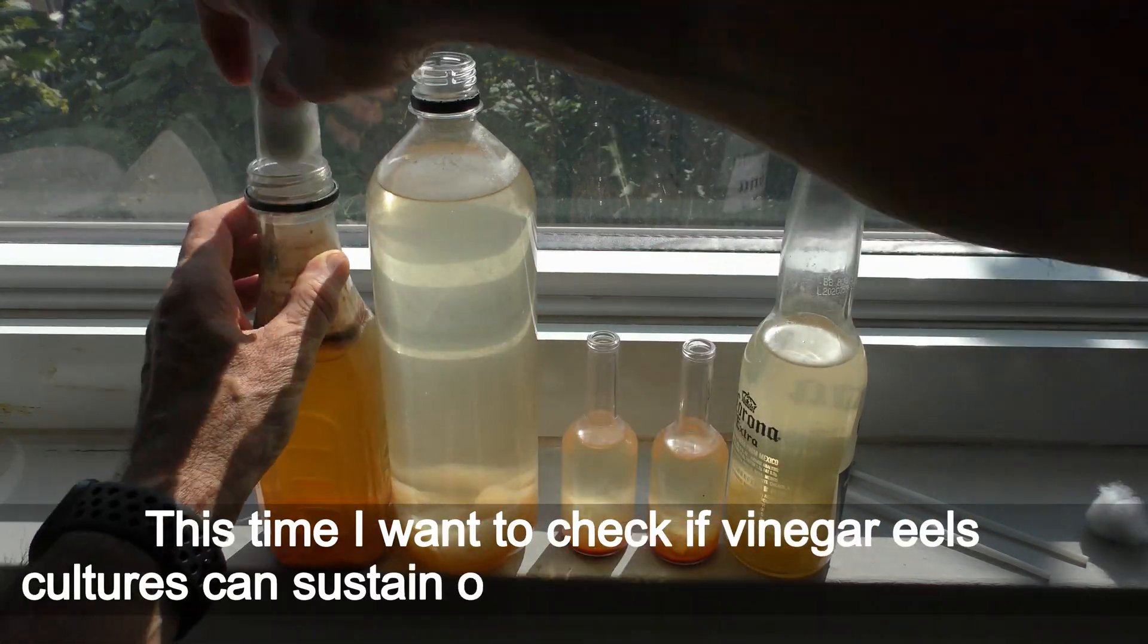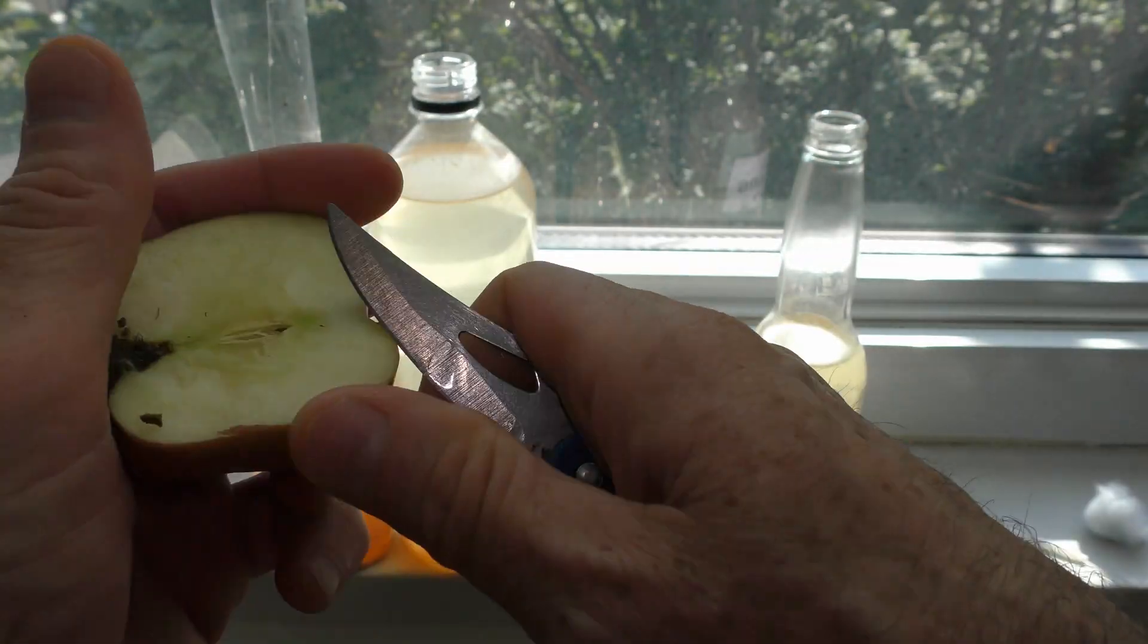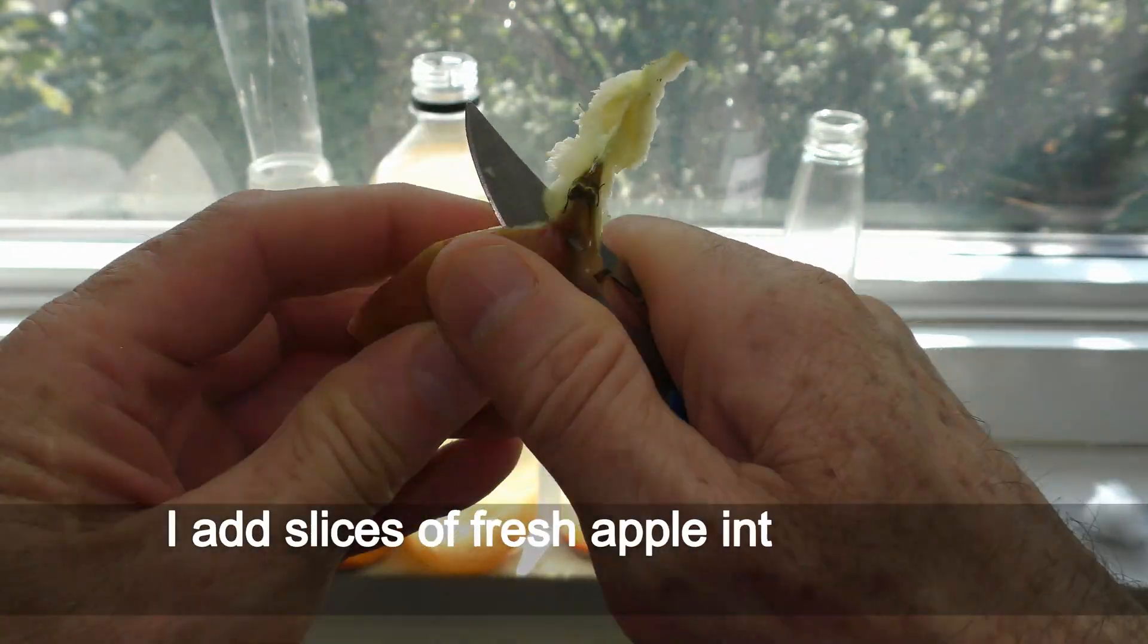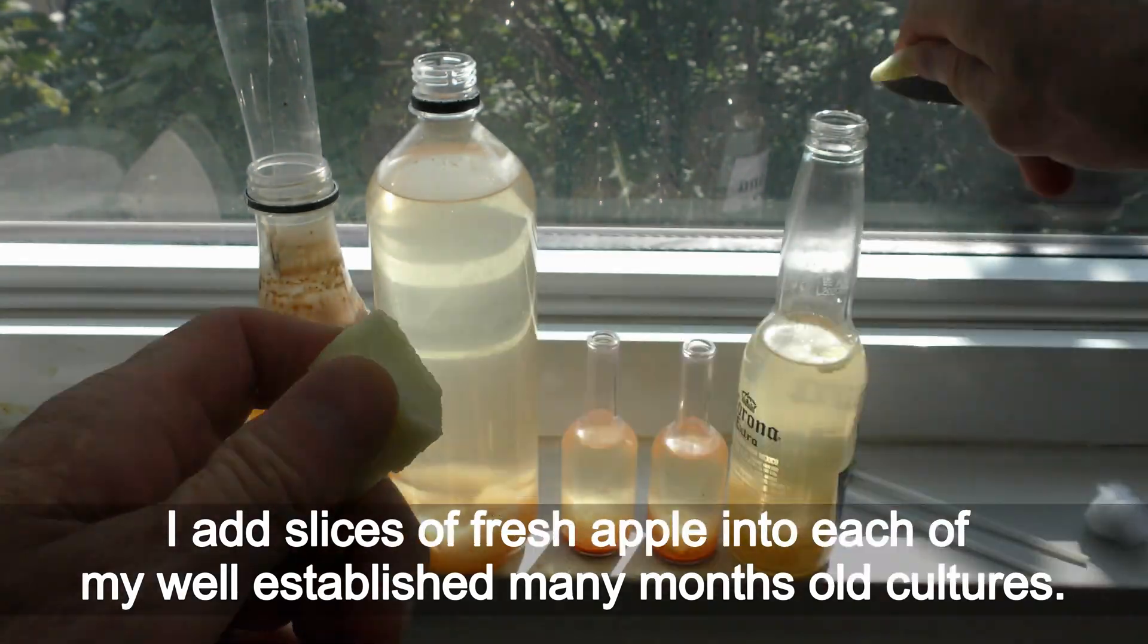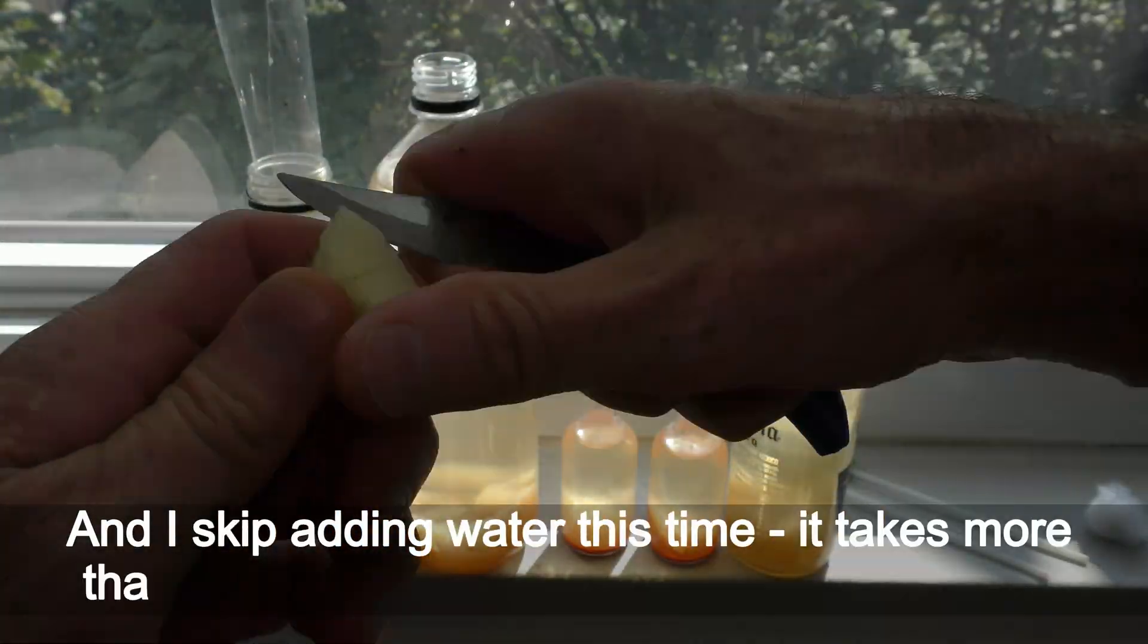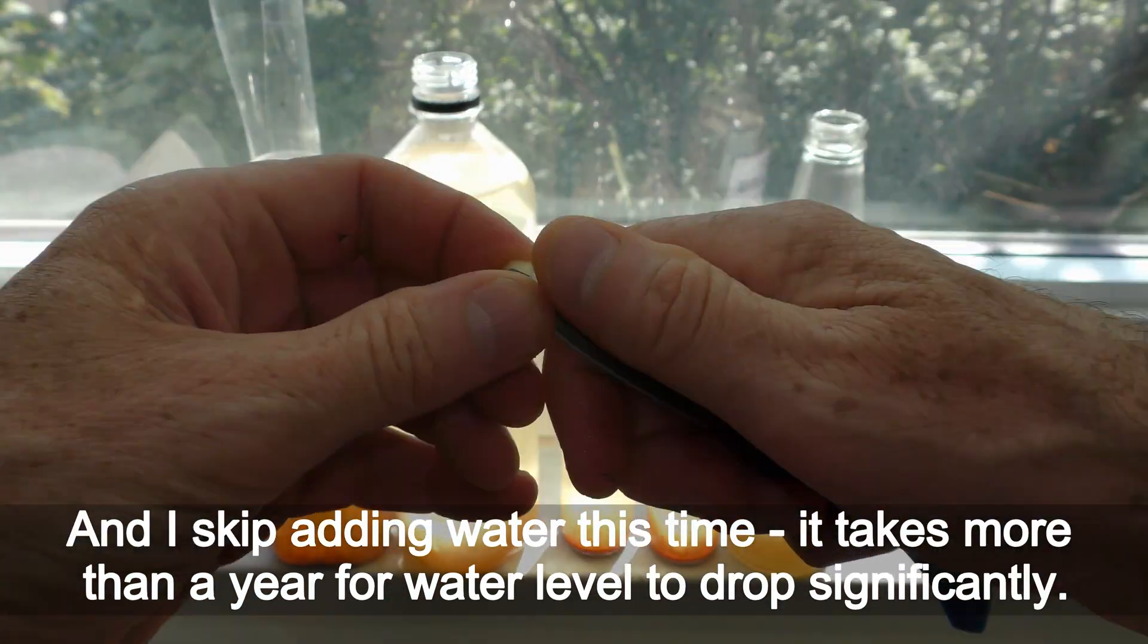This time I want to check if vinegar eel cultures can sustain on one feeding for one season. I add slices of fresh apple into each of my well-established many months old cultures. And I skip adding water this time. It takes more than a year for water level to drop significantly.